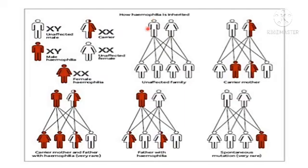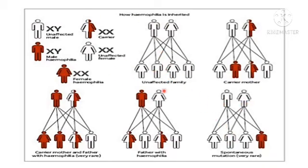When both father and mother are normal, children are also usually normal. Sometimes, even if both parents are normal, spontaneous mutations can occur in any one of the children — though this is very rare. So mostly, if both parents are fine, the children will be normal, but rarely one child may be affected, either male or female.